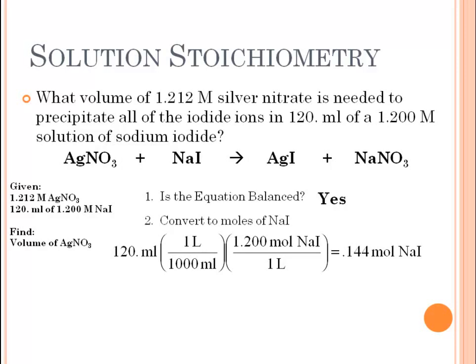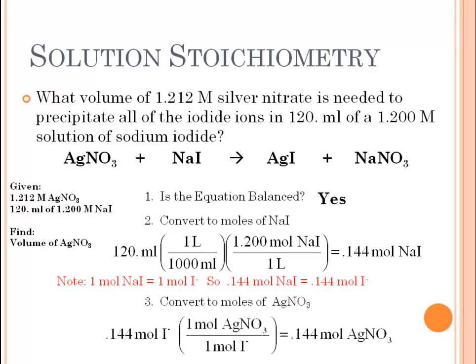To calculate the iodide ions, we look at how many iodide ions are in one formula unit of sodium iodide. When sodium iodide dissociates, one iodide ion is released, so one mole of sodium iodide gives off one mole of iodide ions. Therefore, 0.144 moles of sodium iodide gives 0.144 moles of iodide ions. Using this value and the 1-to-1 mole ratio from the reaction, we find we need 0.144 moles of silver nitrate.